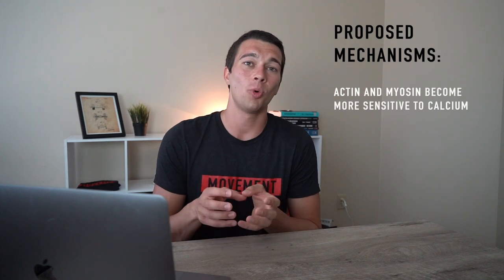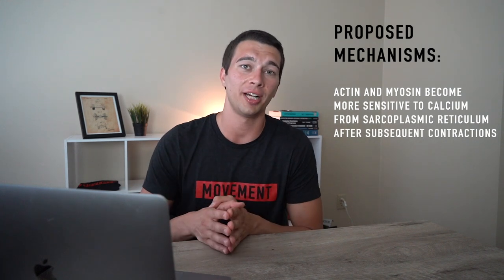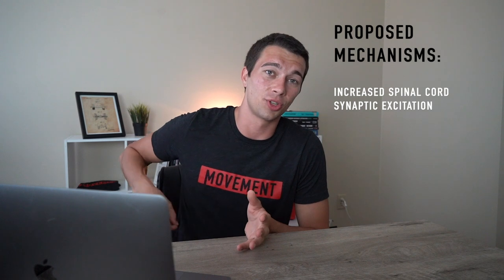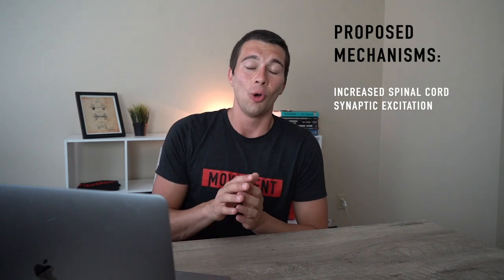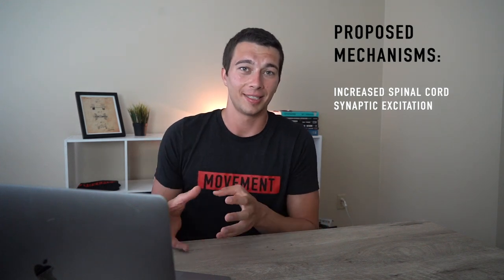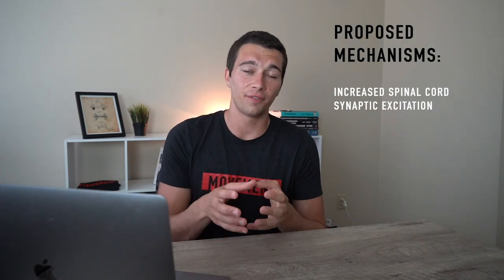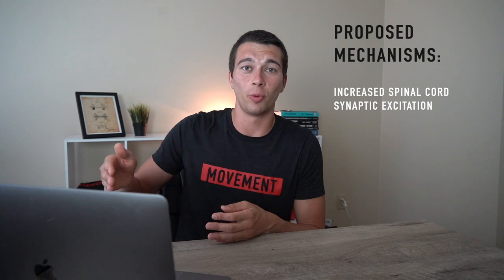To get into the science of post activation potentiation and how this actually works: one proposed mechanism is that the actin and myosin become more sensitive to calcium from the sarcoplasmic reticulum in subsequent contractions when contrast training is used. Another proposed mechanism is increased spinal cord synaptic excitation — in other words, our spinal cord is sending signals through the nerve to the muscle, so the action potential is moving from nerve to nerve through the synapses. We know that plyometric training generally improves our neurophysiological system by improving transmission of action potentials from nerve to nerve, and that can acutely happen from post activation potentiation in subsequent sets.